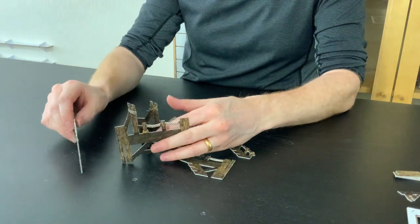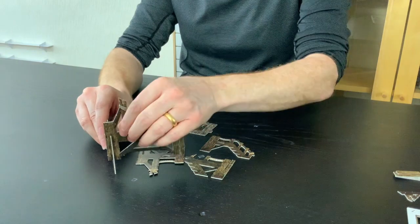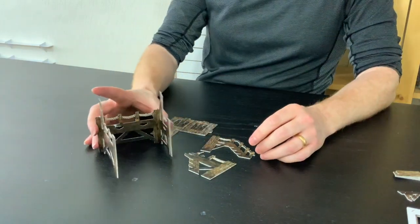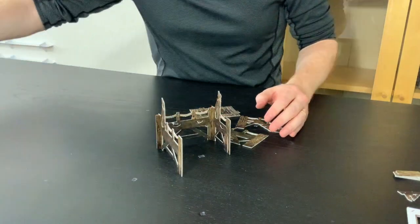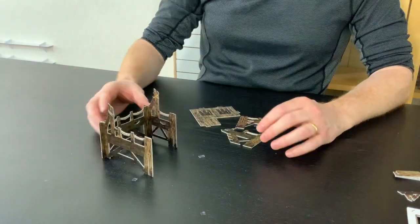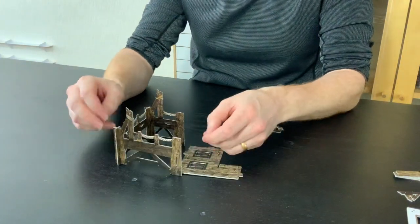So this is the back part. If I just slot this in here, you'll see that this is already the basic structure of your gallows.